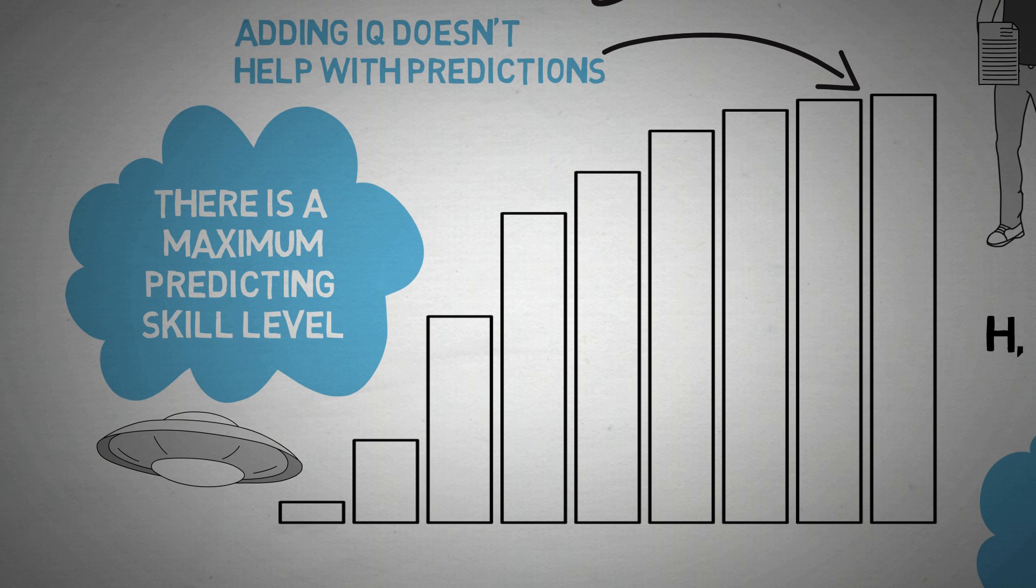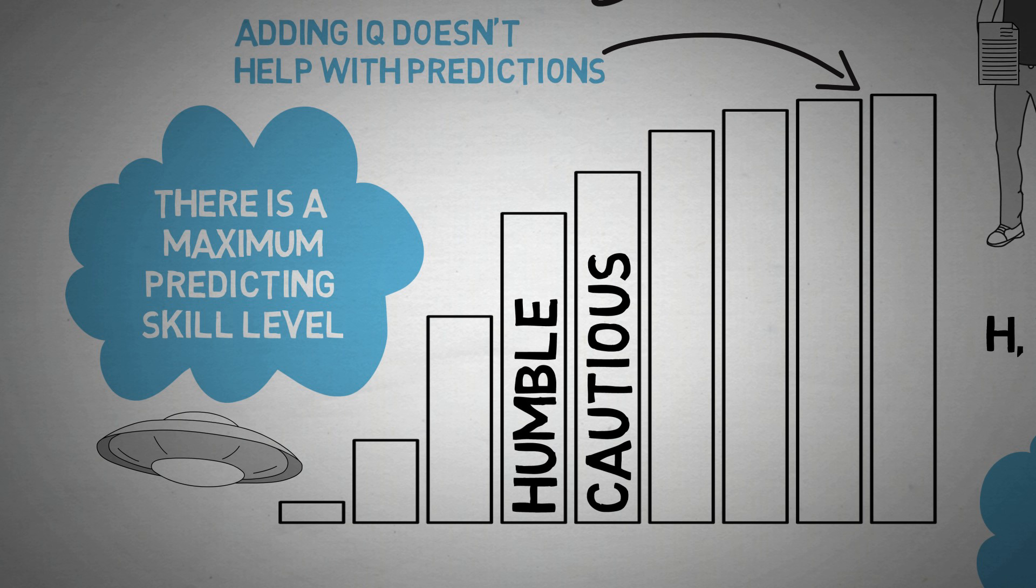The authors came up with a list of qualities that make a great super forecaster. Some of these include being cautious and humble. You have to understand that nothing is certain, and reality is infinitely complex. That's part of being humble.